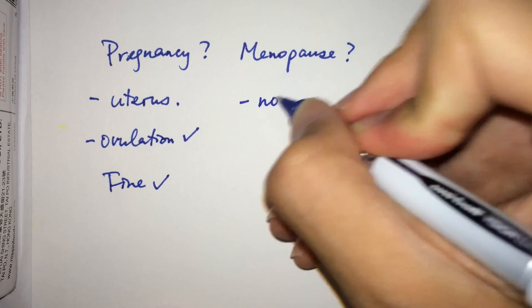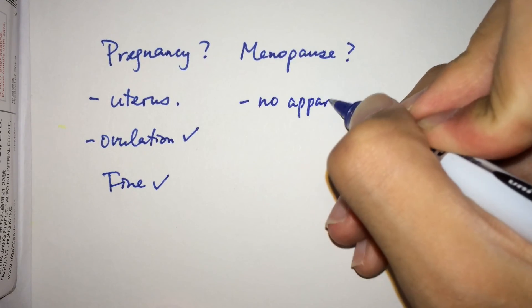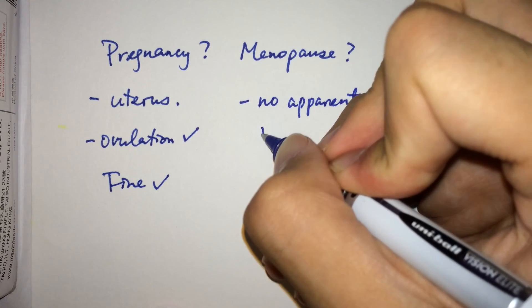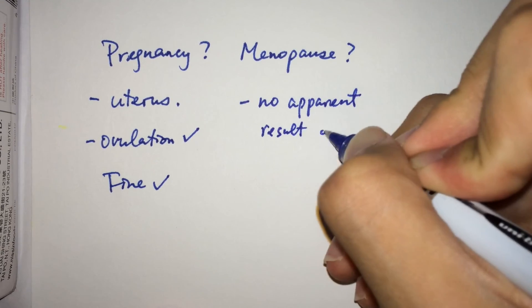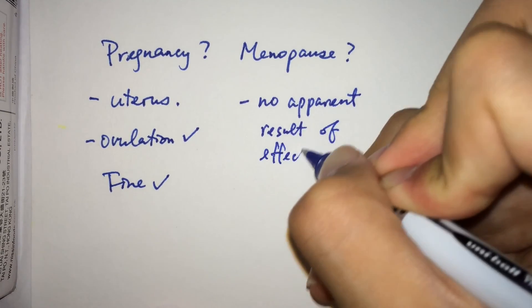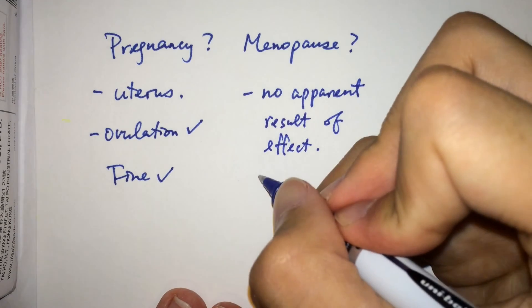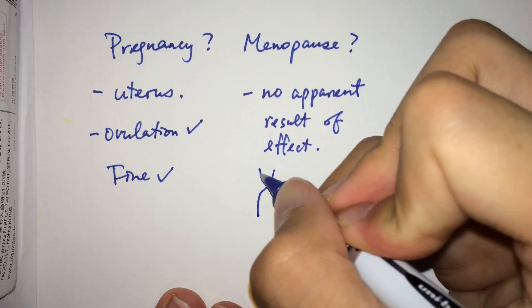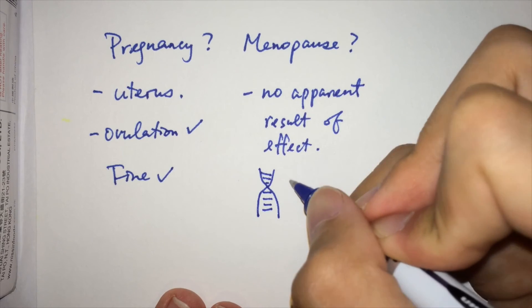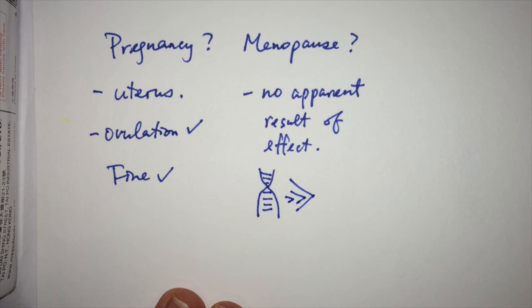Also, there is no obvious relationship between early onset of menopause and unilateral oophorectomy. Researchers find that there is either no effect on timing of menopause or at most one year earlier, which other factors such as genetic factors could easily outweigh.